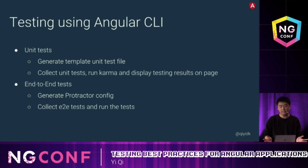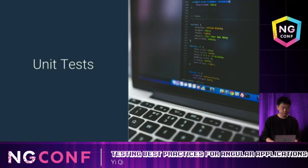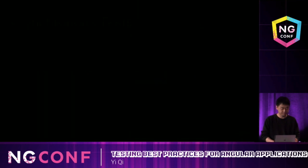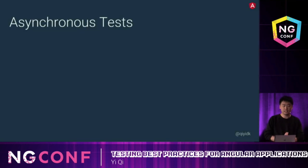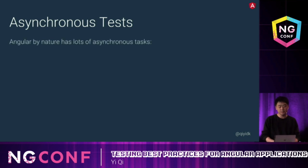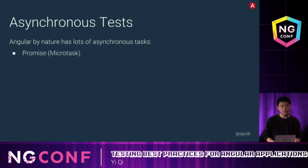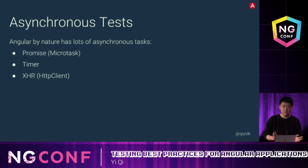Let's take a look at each test in detail, starting with unit tests. Asynchronous tests are a common difficulty we face today. Angular, by nature, has lots of async tasks, so we'll mainly focus on that. We have three kinds of async tasks: the first is Promise, the second is timers like setTimeout and setInterval, and the third is XHR — since most Angular XHR calls are made by HttpClient, we'll mainly focus on that.